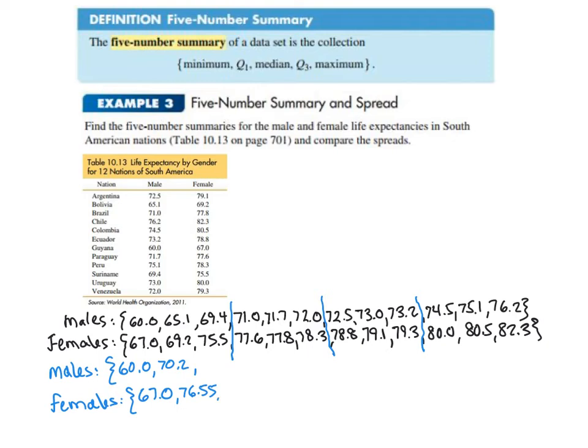The next number is the second quartile, also known as the median. Right in between 72 and 72.5 is 72.25 for the men. And right in between 78.3 and 78.5 is 78.55 for females. The third quartile for the men is right in between 73.2 and 74.5, which are 1.3 apart, so we add 0.65 to get 73.85. For the women, right in between 79.3 and 80 is 79.65. And finally, the maximum for the men is 76.2, and for the females, 82.3.